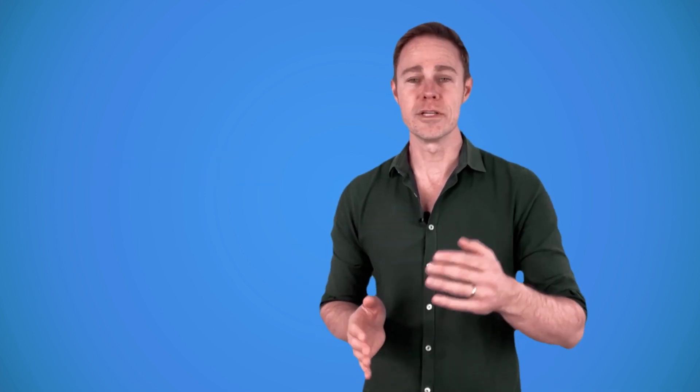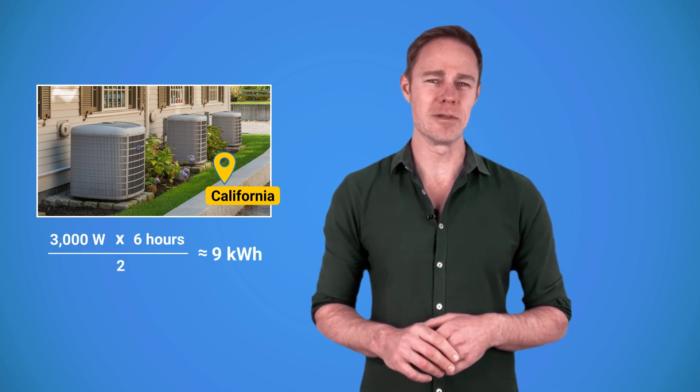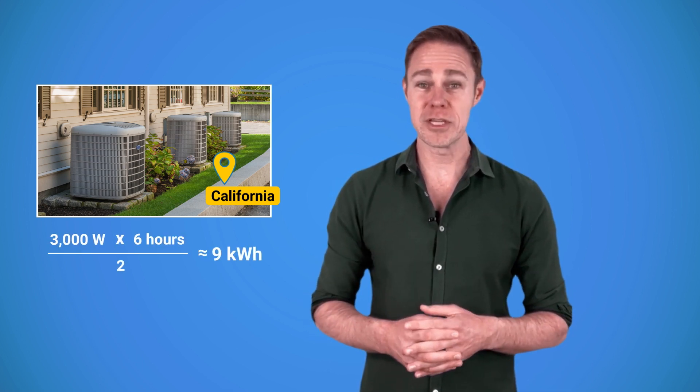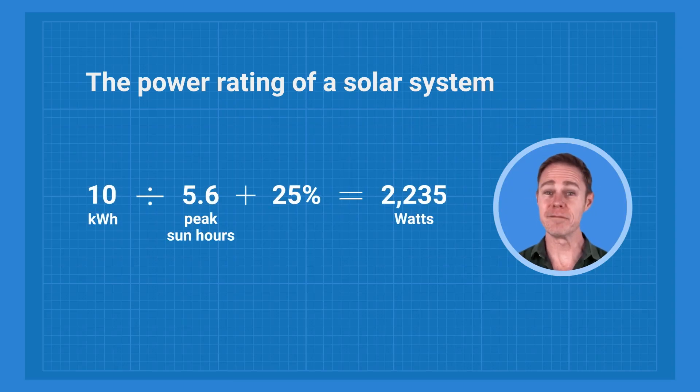For example, let's say we have a 3000 watt air conditioning system in California. We run it for six hours every day. We expect that it will need about 9 to 10 kilowatt hours daily. That's the number that we have to get from solar panels. The number of peak sun hours, which is the time panels work at their best, is around 5.6 in California. If we divide 10 kilowatt hours by 5.6 hours and then add 25% to account for the losses, we get around 2235 watts. This is the power rating of a system that would be able to support an AC system, and you can build it with five 450 watt solar panels.